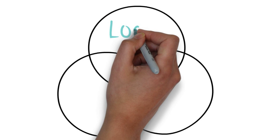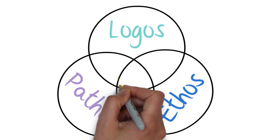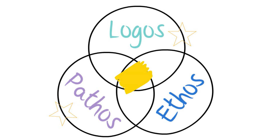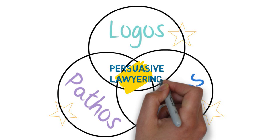As lawyers, we are most persuasive when our argument falls at the intersection of logos, pathos, and ethos. At the intention — what are we trying to get the other to do? When logos, pathos, and ethos are all present, we are most likely to convince or persuade the other.